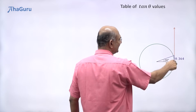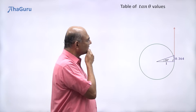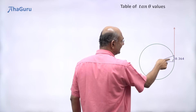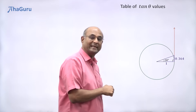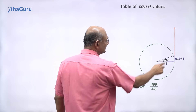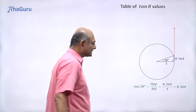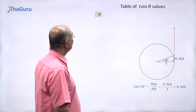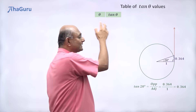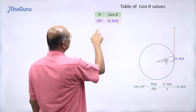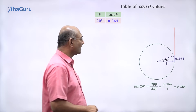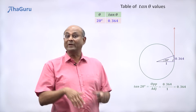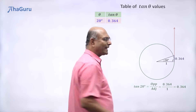Using a scale, I measure and find out that this length is 0.364, in the same units where the radius is 1. This is a right-angle triangle, so tan of 20 degrees is the opposite side by the adjacent side: 0.364 by 1, which is 0.364. So tan 20 degrees is 0.364. We can then write down a table: when the angle is 20 degrees, tan theta is 0.364. It doesn't matter whether this was a small or big triangle, because tan theta only depends on theta, not the size of the triangle.